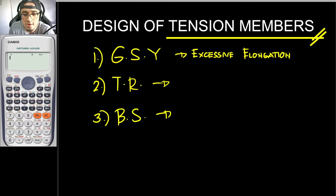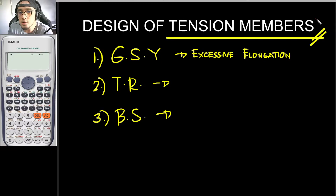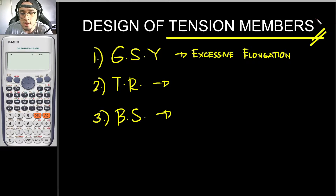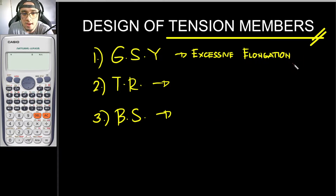When we are to design a tension member, we must choose a member such that, when subjected to tensile load, it should not undergo any of these failures. It should not elongate excessively, it should not rupture, and it should not undergo block shear.